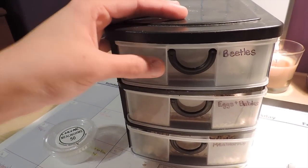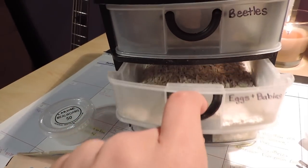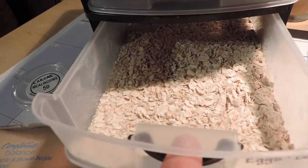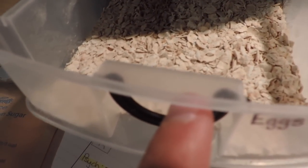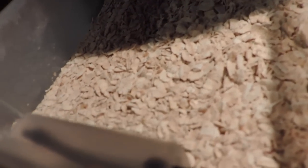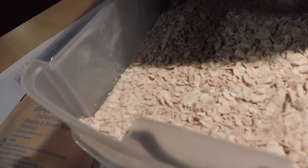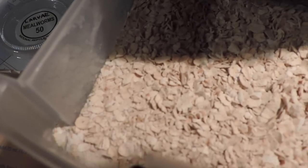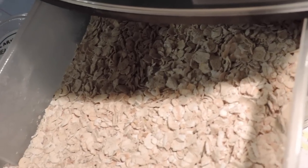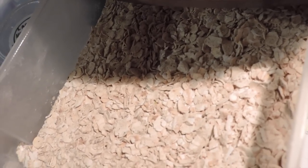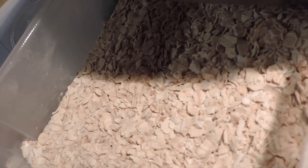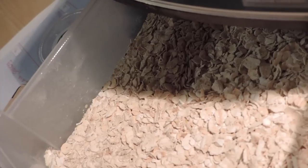When the beetles lay eggs, the eggs fall through the mesh and into the second drawer, which is the eggs and babies. You can't see any in there now. Oh wait, yes you can! Oh cool. Wow, okay, this is the first time I'm actually seeing the worms in here. I don't know if you guys can see that, but there are little guys moving around in there. This is actually really exciting for me because I've been looking in this drawer for weeks and weeks and could not find any worms. They're just so tiny.